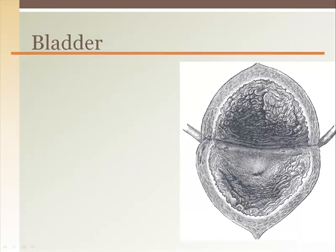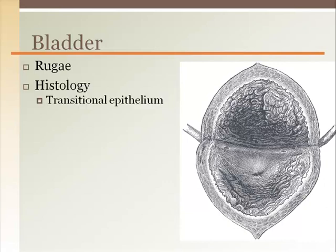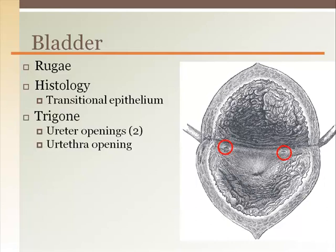Inside an empty bladder are folds called rugae, which allow for expansion of the bladder as it fills. The epithelial lining of the bladder is made of transitional epithelium. This appears to be many layers of cells in the recoiled or empty state; however, when expanded or stretched, there are just a couple of cell layers, which also accommodate the expansion of the bladder while preserving the integrity of the lining. On the floor of the bladder is a triangular area called the trigone, defined by two entering ureter openings and a single exiting urethra opening. This region is a smooth surface as it does not have rugae.